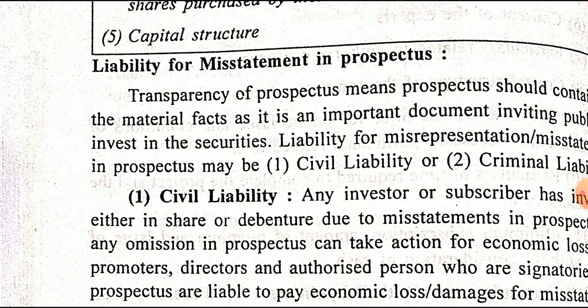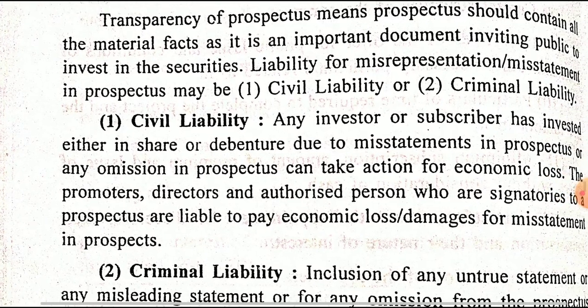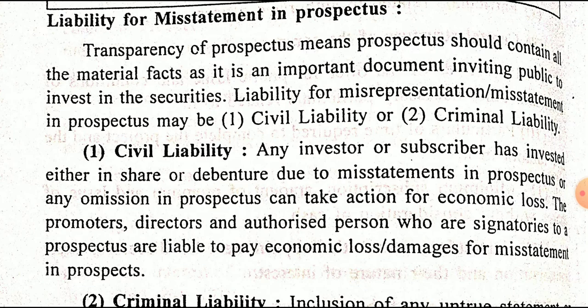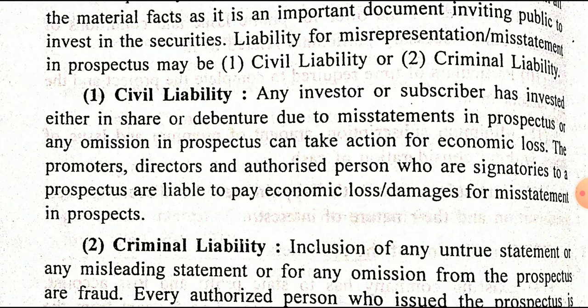Liability means the responsibility of the company whenever the company discloses false information in the prospectus. Civil liability: transparency of the prospectus means that whatever figures or information are included in the prospectus must be true and valid. The prospectus should contain all material facts — it is an important document inviting the public to invest in securities.